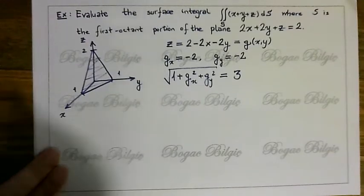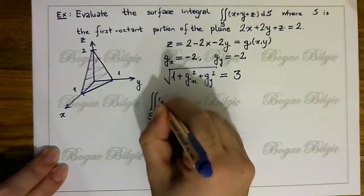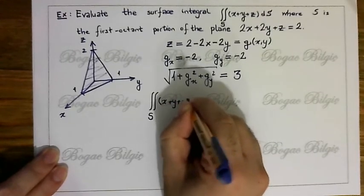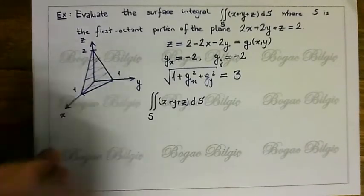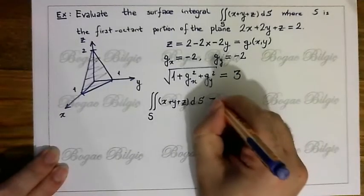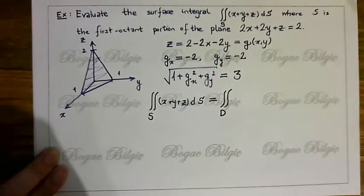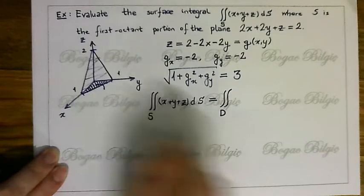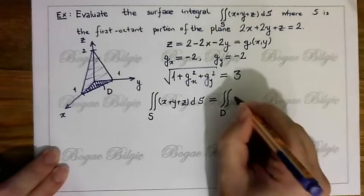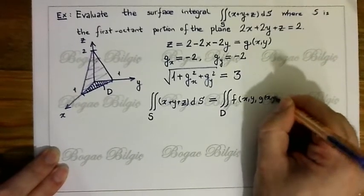Now we want to calculate this surface integral. This is a scalar function. Using the theorem, you obtain this integral is equal to the double integral over D — where D is the projection area — of F(x, y, G(x,y)) multiplied by √(1 + Gx² + Gy²) dA.